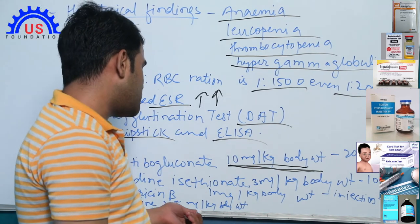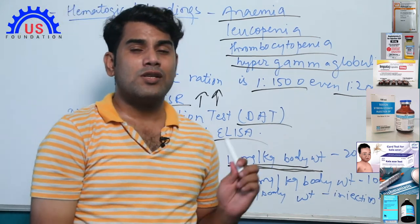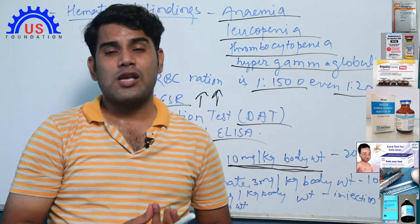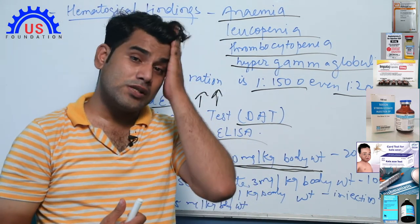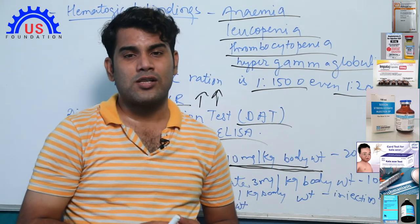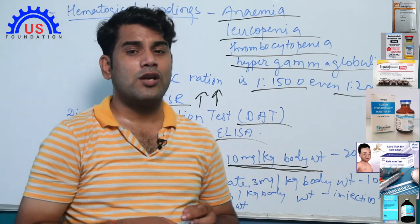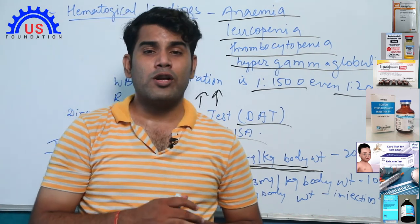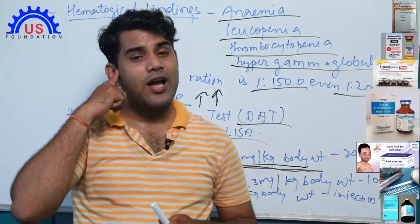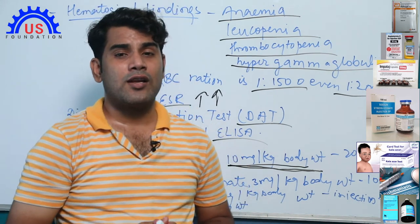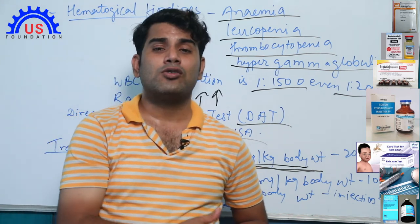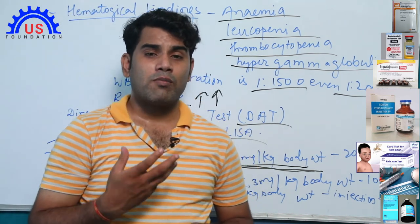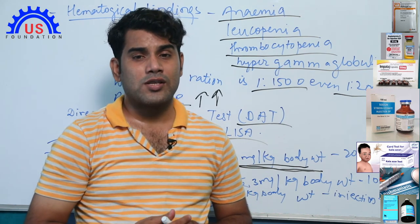Miltefosine is given at 2 mg per kg body weight for approximately 4 weeks. Along with these medicines, the body experiences weakness and fatigue. To address loss of appetite and weakness, enzymes and appetite-stimulating supplements can be added. Fluid replacement and nutritious food that provides strength are also important, since patients are ill for many days with fever. Kalajar is a deadly fatal disease, so keep this in mind. That's all from my slides; in the next classes, we will discuss more diseases. Thank you.